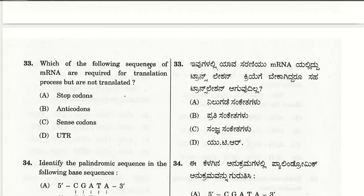The thirty-third question: which sequences of mRNA are required for the translation process but are not translated? We have to identify those sequences. The answer is UTR — untranslated regions — which are required for translation but are not themselves translated.